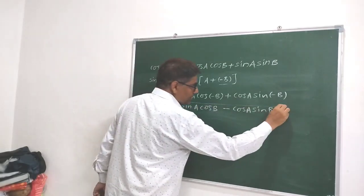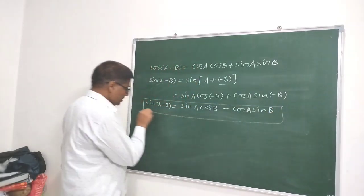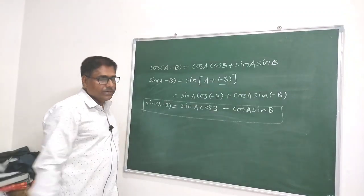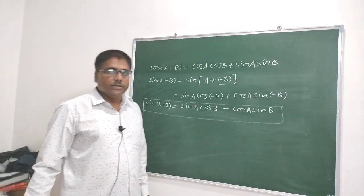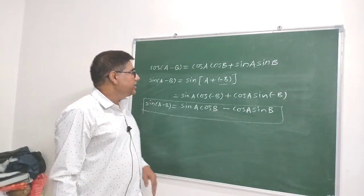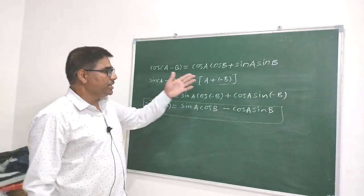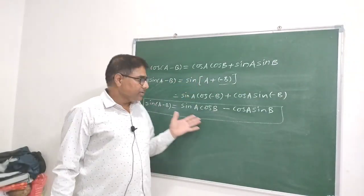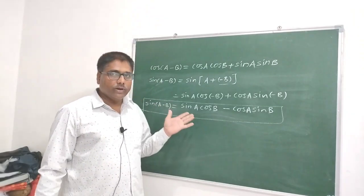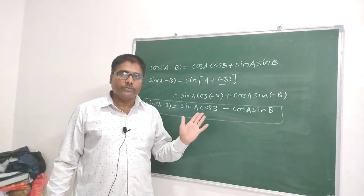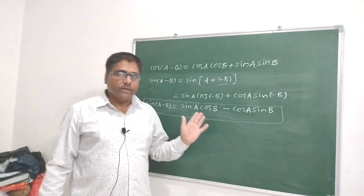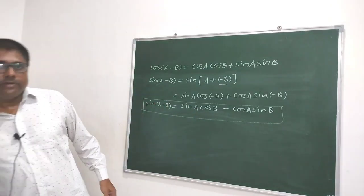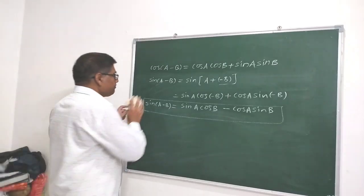In this way, we have derived three more formulae from cos(A-B). In total, we have four basic formulae. Let us write all these formulae together in one place.